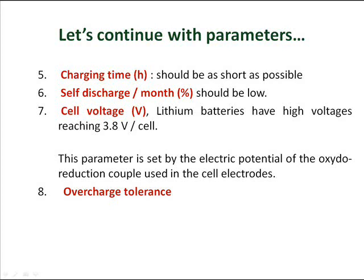Continuing with parameters: charging time in hours should be as short as possible. Self-discharge per month, expressed as a percentage, should be low. The cell voltage in volts is another parameter — for example, lithium batteries have high voltages reaching 3.8 volts per cell. This parameter is set by the electric potential of the oxidation-reduction couple used in the cell electrodes. Another parameter is the overcharge tolerance.